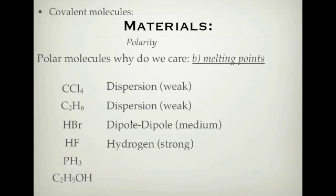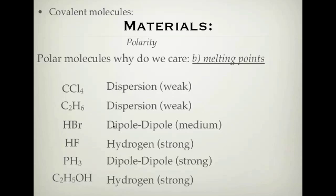The remaining four molecules have no symmetry whatsoever, so they are all polar substances. Hydrogen fluoride (HF) has fluorine — one of the FON molecules — so it has hydrogen bonds. Hydrogen bromide (HBr) has dipole-dipole medium-strength intermolecular forces, because it doesn't contain a FON molecule. Phosphorus trihydride (PH3) similarly has dipole-dipole forces. Ethanol has an OH group, which tells us it has hydrogen bonding — oxygen is one of our FON molecules, signifying hydrogen bonds.